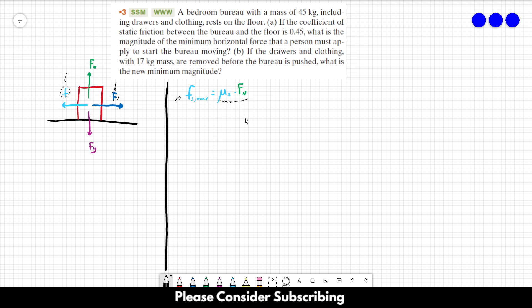So that's the only thing that we have to do. We know this value, the mu s, the normal force. Since we only have vertical forces, the normal force and the gravitational force, we know that the normal force is equal to the gravitational force in magnitude. So this is going to be equal to mass times gravity.